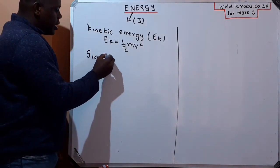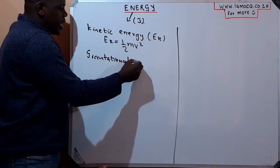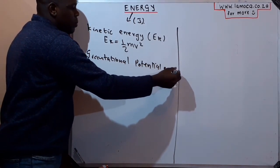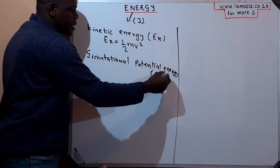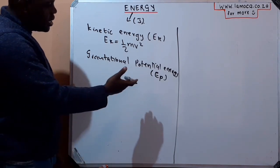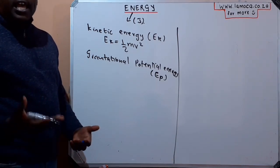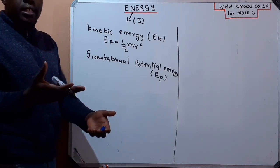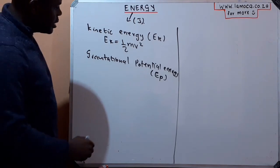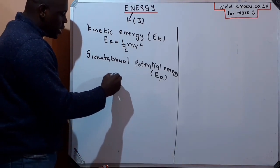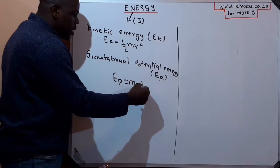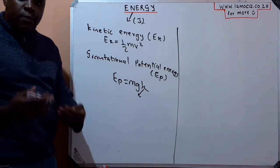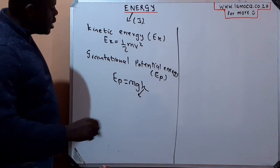The second type of energy is called gravitational potential energy. We denote it by Ep. Gravitational potential energy is the energy an object has because of its position above the earth's surface — how high is it above the earth's surface. When we know that, we can calculate its gravitational potential energy, which is Ep = mgh, where h is the height of the object above the earth's surface.